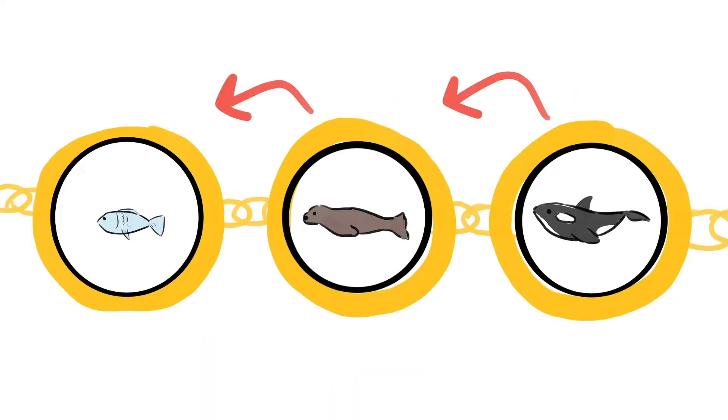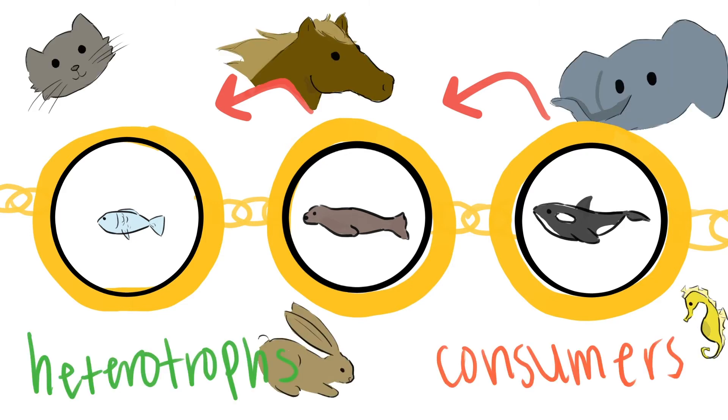The rest of the organisms, which are all animals, are known as heterotrophs because they can't make their own energy. Heterotrophs are also known as consumers because they need to eat food, like other plants or animals, to get energy.